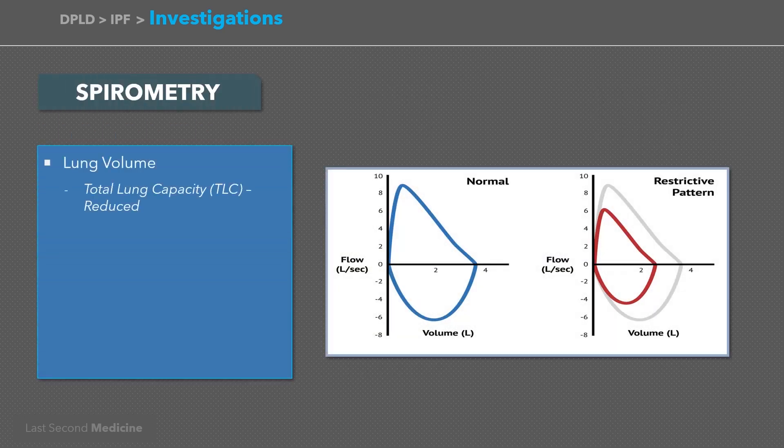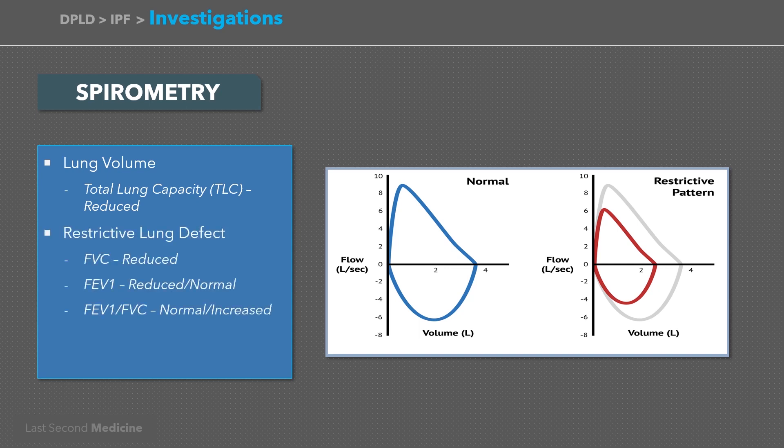On spirometry, there is a typical feature of restrictive lung defect and reduced lung volumes. Reduced lung volume is seen as reduced total lung capacity. Restrictive lung defect is seen as a reduction in forced vital capacity. FEV1 may be normal or reduced, and the ratio of FEV1 to FVC is usually normal or increased. There is also impaired gas transfer, i.e. DLCO is reduced.